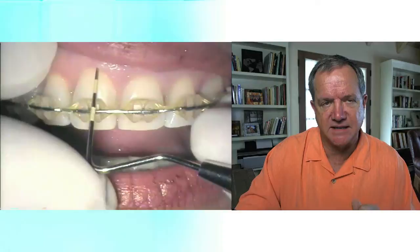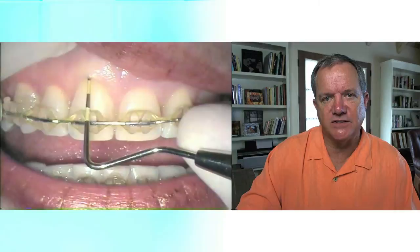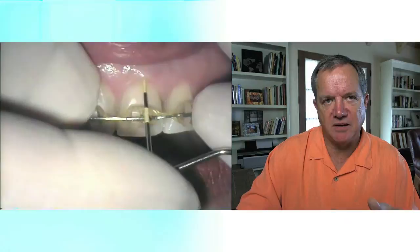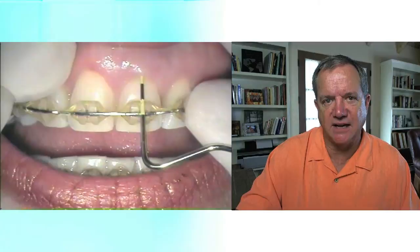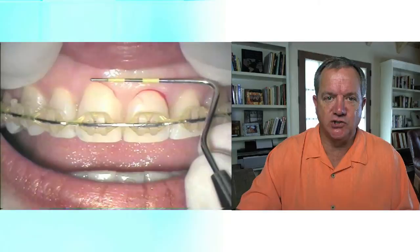Here is some video of doing the gingivectomy. We probe the right central — it probes about one and a half. It's anesthetized. Pushing to bone — so-called sounding — gives a sounding depth of about three millimeters, kind of normal, just like Gargiulo, Wentz, and Orban's diagram. Now we go to the left central. We probe the sulcus — it probes about three. We push all the way to bone and it goes close to five millimeters. So we should be able to easily take off a millimeter to a millimeter and a half to get this tissue level. We're marking where the tissue should go.